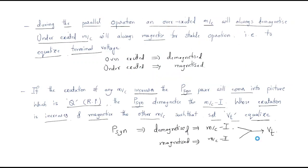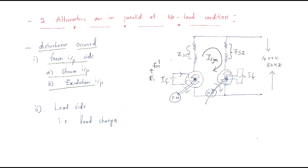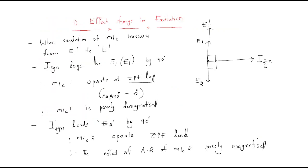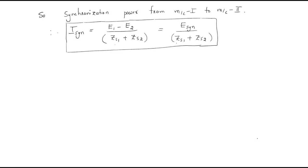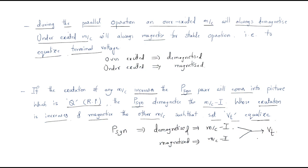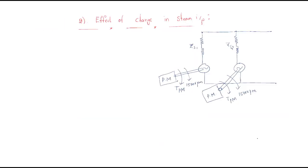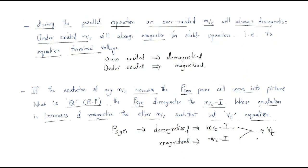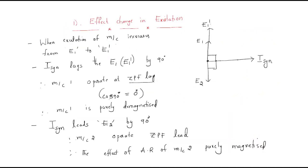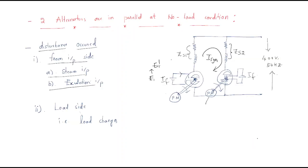This is about when two alternators operate in parallel condition with any change in excitation — what the formula for synchronization is, how synchronization power is generated, and the effect of change in steam input and change in excitation. This is a very important topic — the parallel operation of two alternators. I hope all of you understand the session. Thank you.